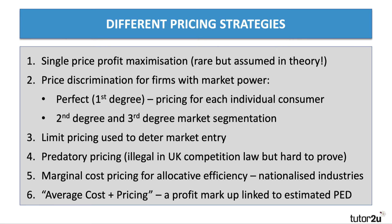Marginal cost pricing for allocative efficiency is often the case with public services, where the price may be set at the marginal cost of supply. It's designed to bring more consumers into the market, which may involve making a loss, but it increases consumer surplus. We typically associate this with state-owned enterprises or public service businesses.